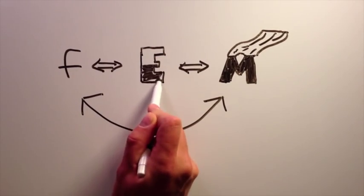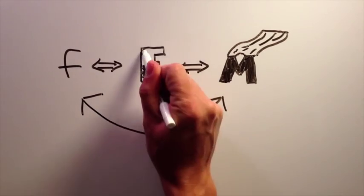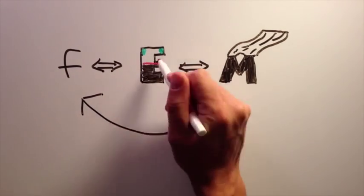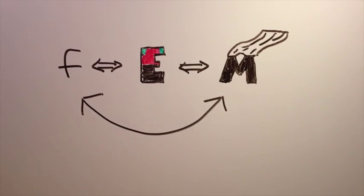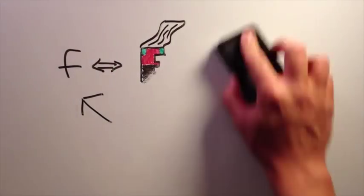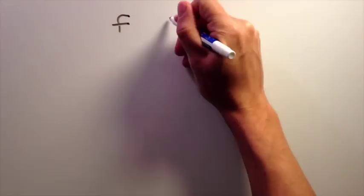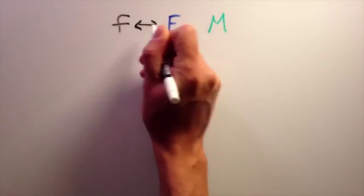The eccentric anomaly is a helper variable that gets us from the true anomaly to the mean anomaly and back again. If the mean anomaly is Batman, then the eccentric anomaly is Robin. Let's see how the true anomaly, mean anomaly, and eccentric anomaly are related to each other.